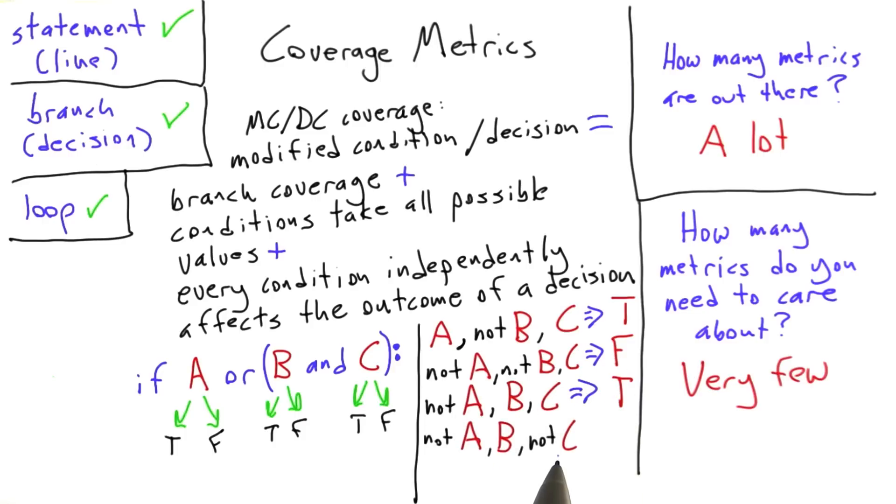So now let's see if we can do the same thing for C. So we're going to leave A and B the same, and we're going to pass in C as false. So now let's look what happens. B and C evaluates to false, and then also A is false. So the entire value of the Boolean decision comes out to be false. So by only changing C, and by seeing that the overall decision changed value, we've now shown that C independently affects the outcome of the decision.